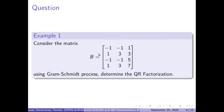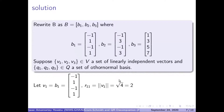So we want to understand how we'll be able to do the QR decomposition from this example. Considering the matrix B, which is 4 by 3, using the Gram-Schmidt process, determine the QR factorization. To solve that, we rewrite our B into the following columns: B1, B2, B3.